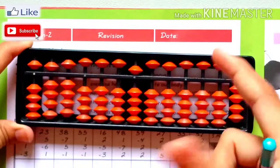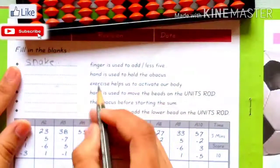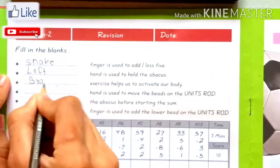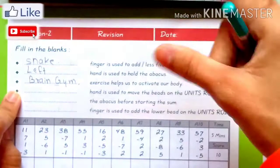So we minus with index finger and add or minus. You can ask what finger do you use with index finger. Your hand writing is not so good but you understand. Left hand is used to hold the abacus. Exercise helps to activate your body. In abacus we do brain gym. Brain gym means exercise. We will put brain gym videos in the next class.